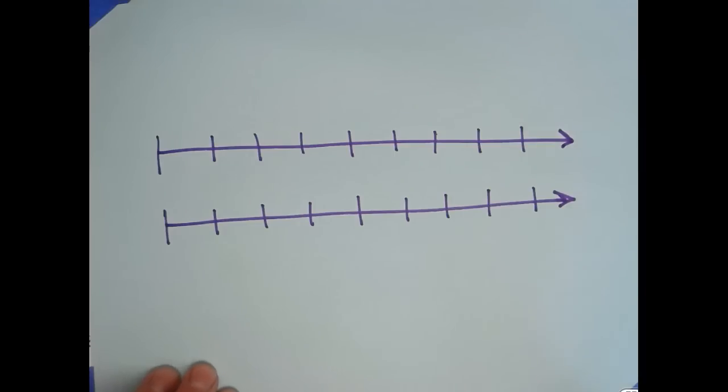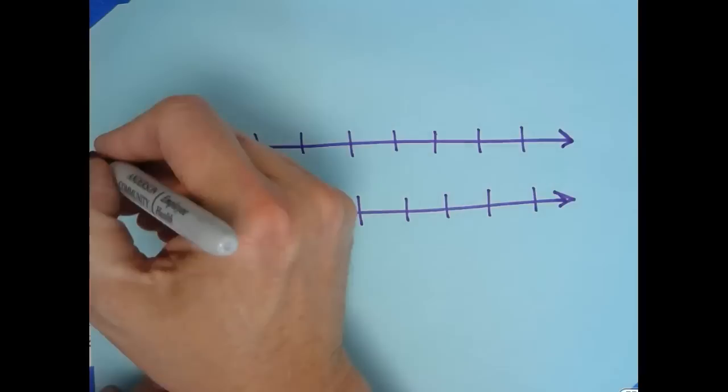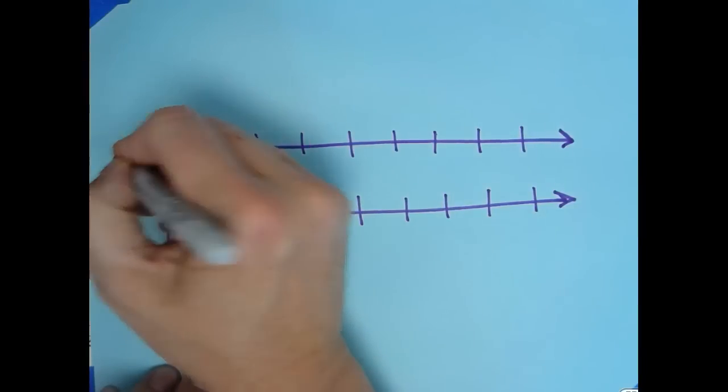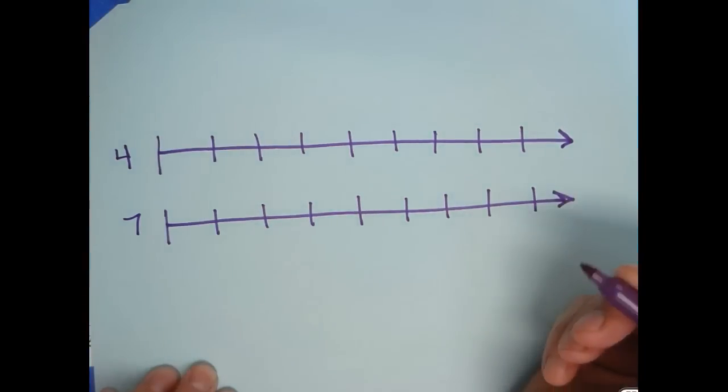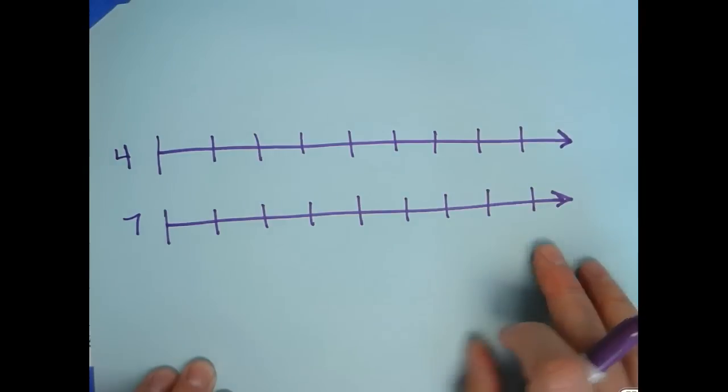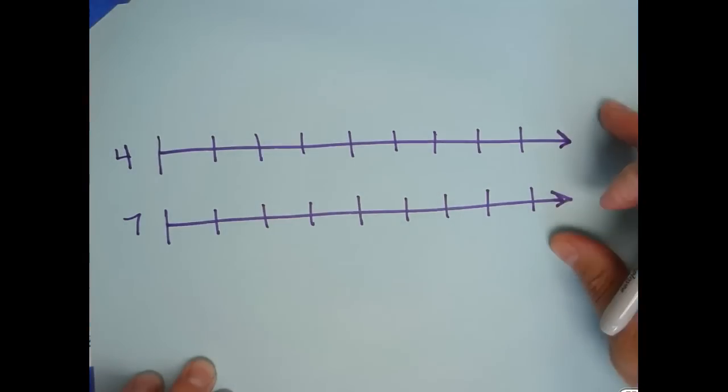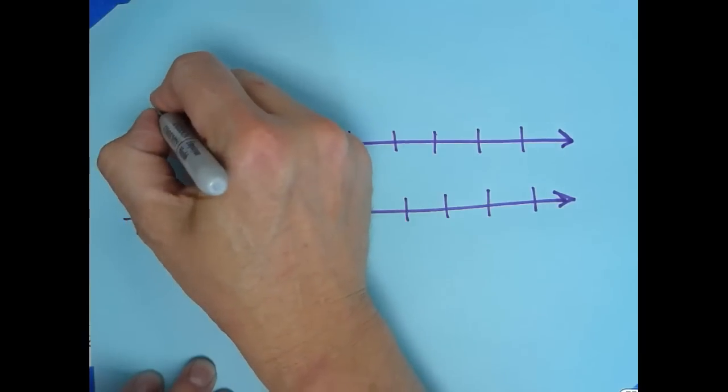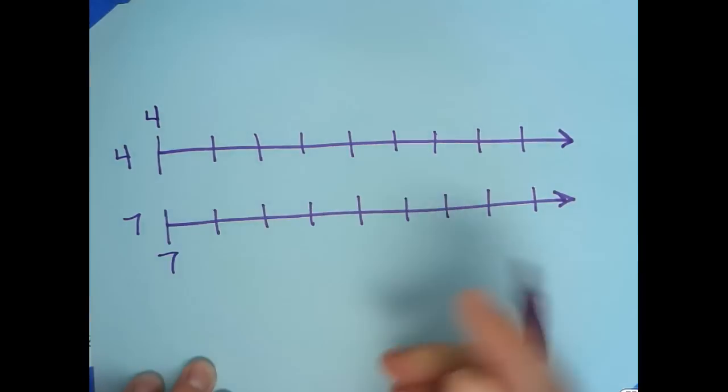Now when we look at any ratio, let's choose a ratio of four to seven. We can determine what each amount would be as we extend it out by using our double number line. So we have here a ratio four to seven, so the first group is going to have four, the second group is going to have seven.